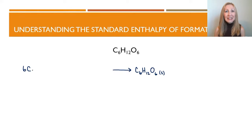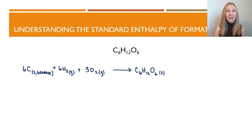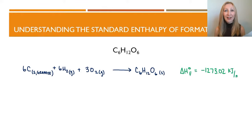Glucose consists of six carbons. Six carbons in their most pure natural form at one atmosphere is graphite. So six moles of carbon in graphite form, plus six moles of H₂ in gas form, plus three moles of O₂ gives us one mole of glucose. This glucose is formed from standard state reactants — the individual elements in their standard states. We can look up these values on a table of selected substances to find the standard heat of formation, because these values have already been determined in lab experiments at standard states.